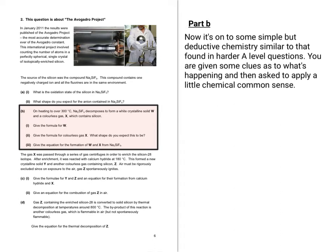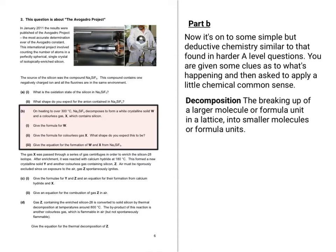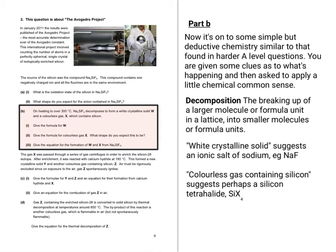We're now on to some simple but fairly deductive chemistry. It's worded in a similar way to many harder A-level questions. You might come across questions like this in an actual A-level later in your course. You're given some clues as to what's happening and then asked to apply a little chemical common sense. It tells you that on heating over 300 degrees C, the Na₂SiF₆ decomposes - in other words, it breaks up into smaller molecules or formula units. A white crystalline solid W is formed and so is a colourless gas X. Your white crystalline solid might be an ionic salt of sodium, for example, such as sodium fluoride. And a colourless gas containing silicon might be a silicon tetrahalide.